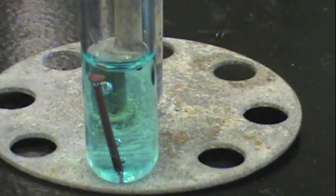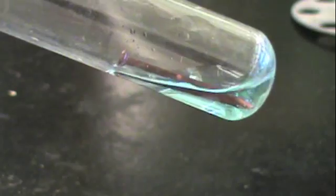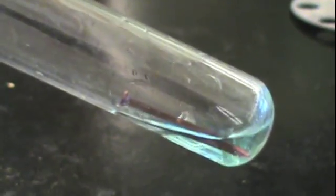After a minute and a half, we see that the nail is even more reddish-brown. And when we decant the copper sulfate, the nail is quite red, indicating that copper has been deposited.